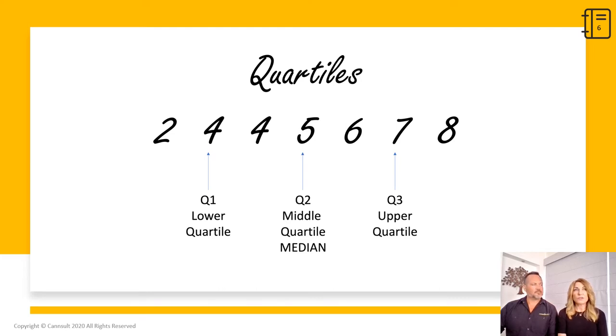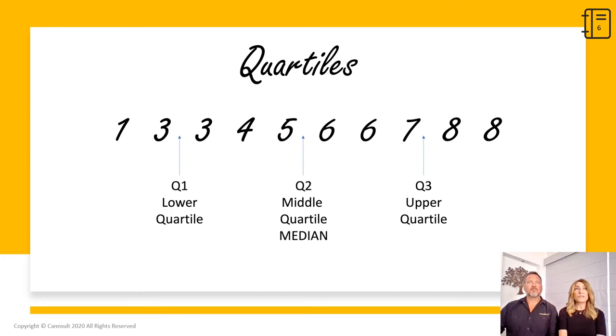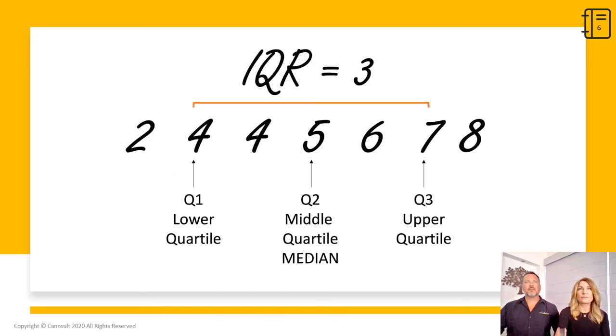Sometimes a cut is between two numbers. Then the quartile is the average of those two numbers. For example, cut this data into quarters. In this case, quartile two is halfway between five and six. If we add five plus six and divide by two, we get 5.5. So quartile one is three, quartile two is 5.5, and quartile three is 7.5.